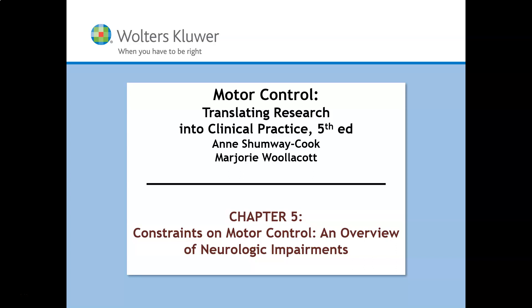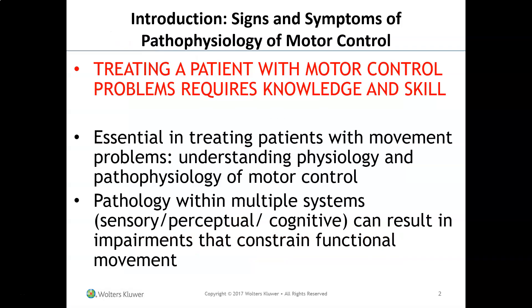All right, class. Today we start chapter five, and we're going to talk about the constraints of motor control, an overview of neurological impairments. We'll look at each individual case study and actually look at some videos.